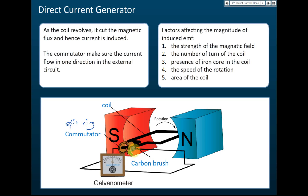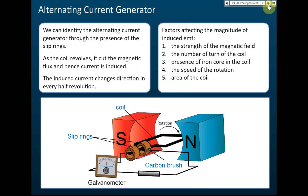For the alternating current generator, there is no split ring commutator. Instead, it has two slip rings. So that is the difference between an alternating current generator and a direct current generator.